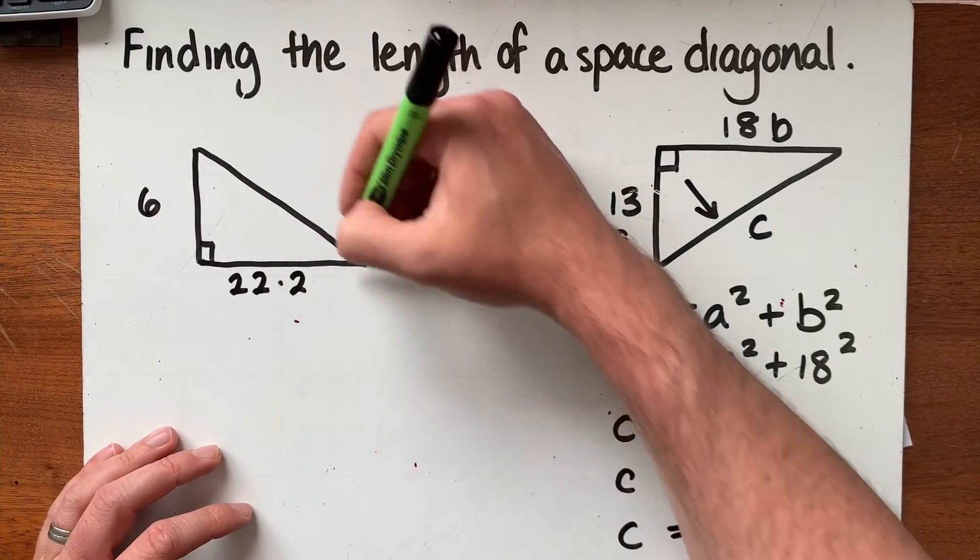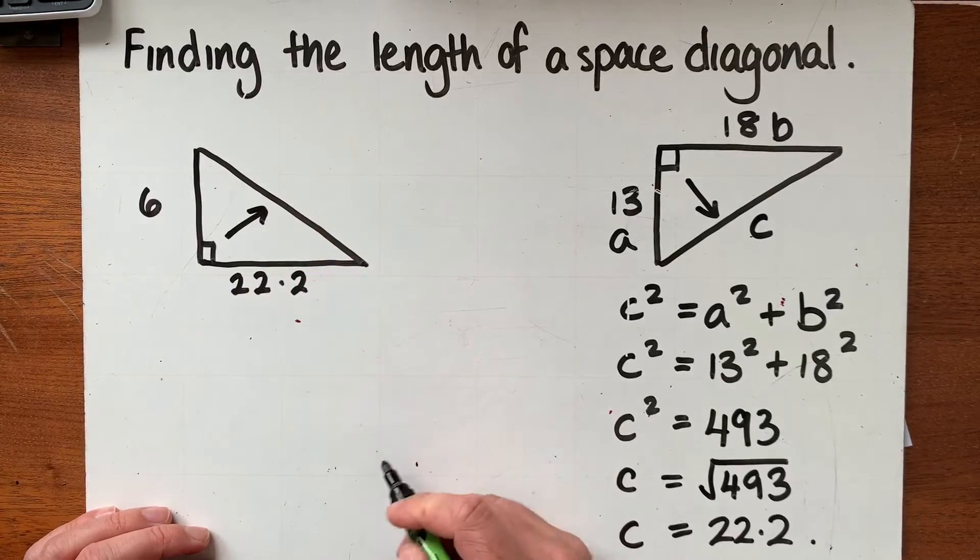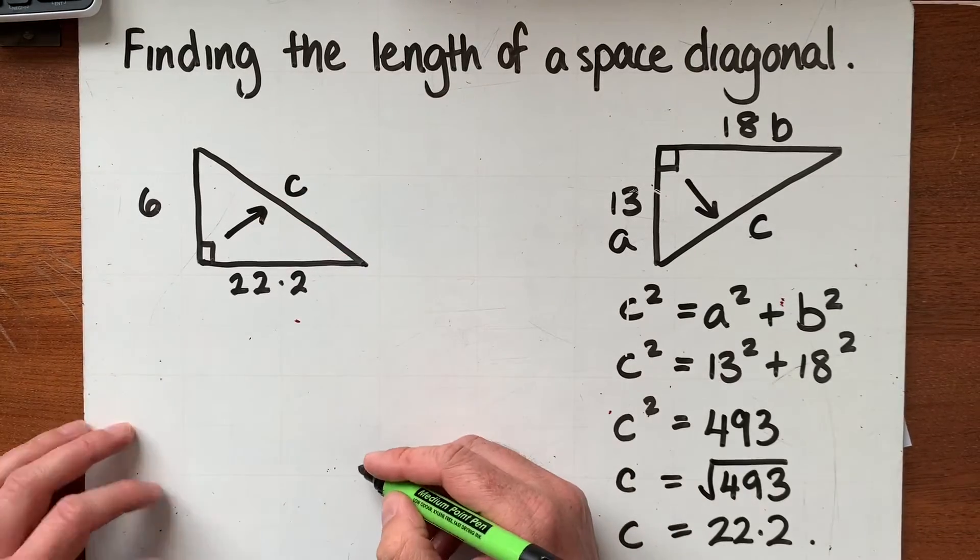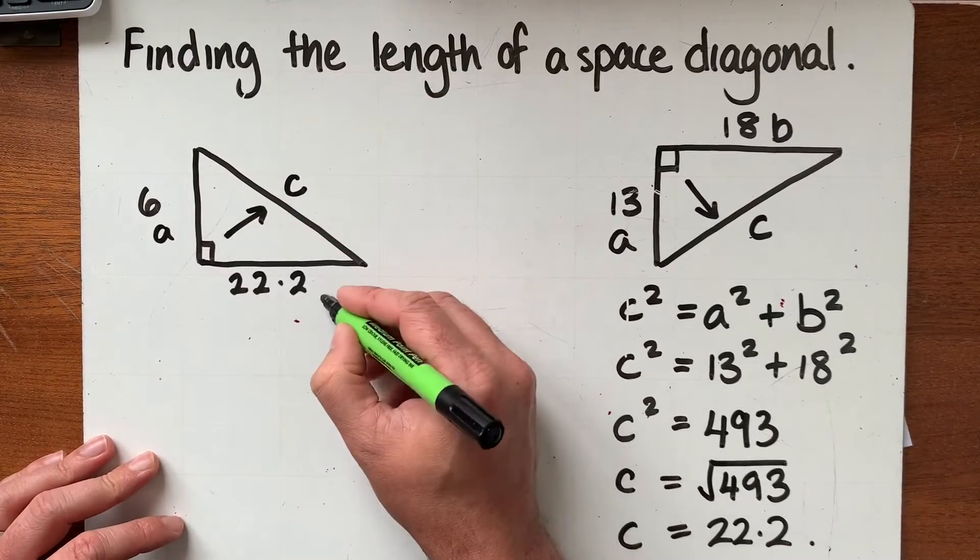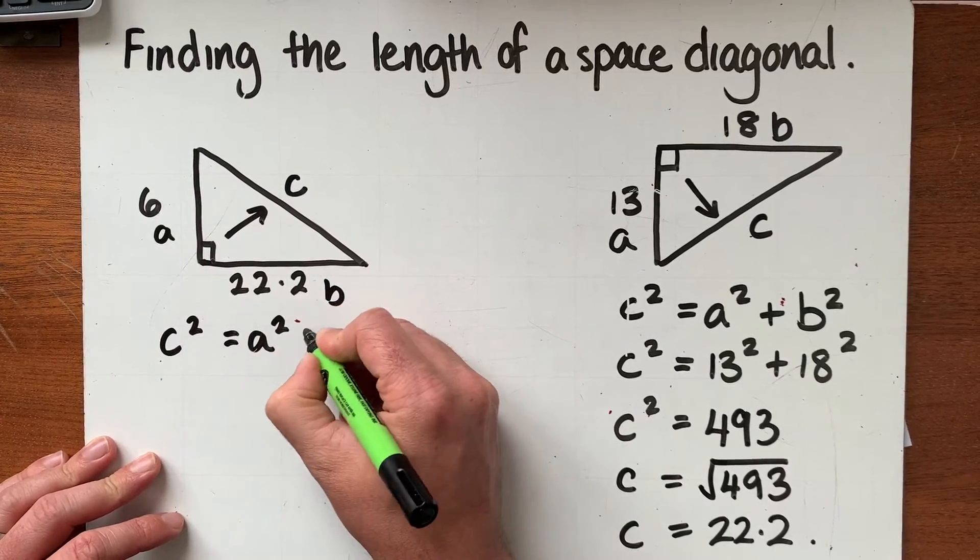And this is our space diagonal here so this is the one that we're trying to work out and what you can see as well it's another right angle triangle we're finding the hypotenuse again. So again I can call that C, I could call this A and B and we're going to go for another round of Pythagoras's theorem.